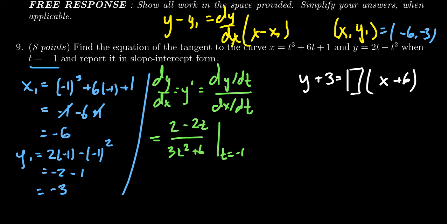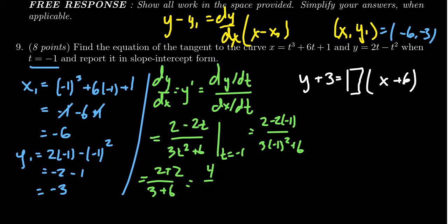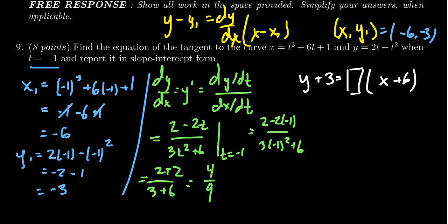And then we evaluate this when t equals negative 1. In which case that gives us 2 minus 2 times negative 1 on top, and we have 3 times negative 1 squared plus 6 on the bottom. In the numerator you're going to end up with 2 plus 2. In the denominator you're going to end up with 3 plus 6. So we end up with 4 over 9, 4 ninths.